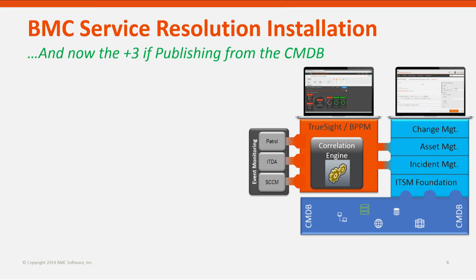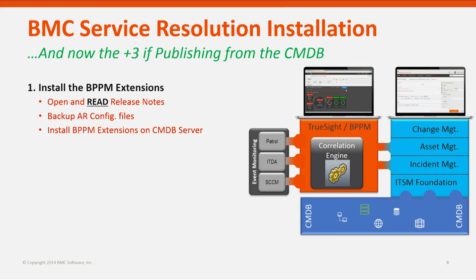Now, I alluded to this a little bit earlier — there are five steps plus three more. This part of the installation process really is enabling capability that's core to the TrueSight Event Management solution. It's looking at providing an ability to publish information in the CMDB into TrueSight. So we're going to talk through the three high-level steps of completing that installation process and enabling that capability. What we have is what's referred to as the CMDB BPPM extensions, and you want to install these extensions on the CMDB server.